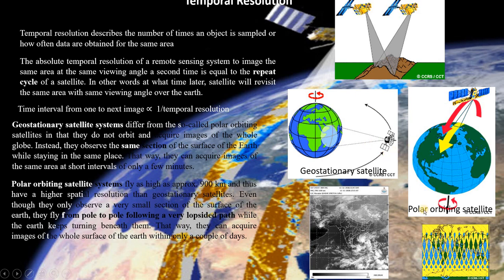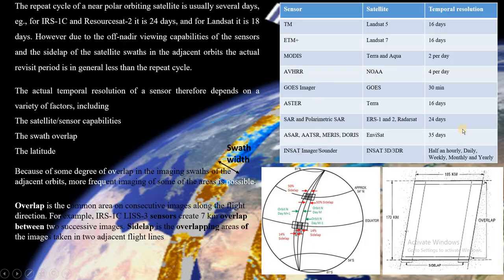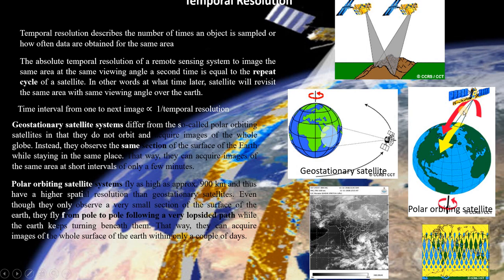Coming to polar orbiting satellites, unlike geostationary satellites they are not fixed at one particular location in space. Instead they move from the north pole to the south pole of the earth at heights of about 300 to 800 kilometers away from the earth. You can see the tracks of polar orbiting satellites — this is how they look moving around the globe. One advantage of polar orbiting satellites is that they cover the whole globe since they move from north pole to south pole.